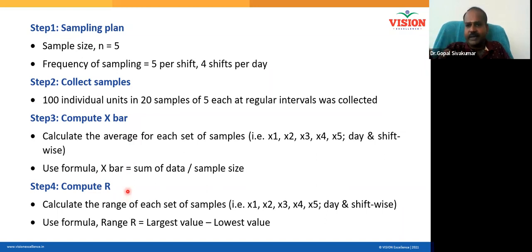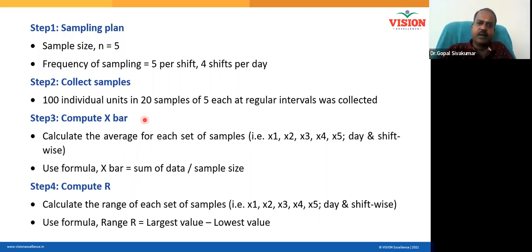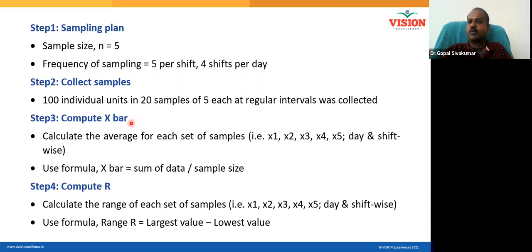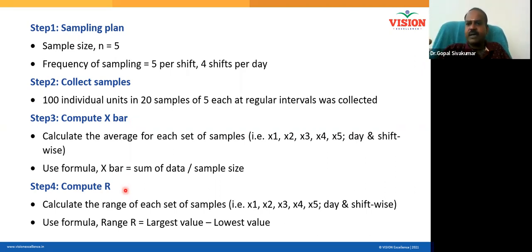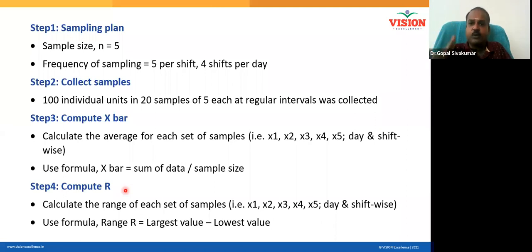Calculate x-bar, which is the subgroup average — add all the five and divide by five. Calculate R, which is the subgroup range. How to calculate subgroup range: maximum of the five minus minimum of the five. There is a reason why we look at subgroup average and subgroup range.